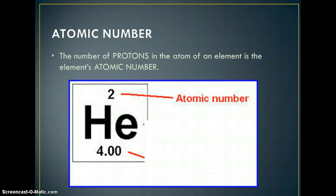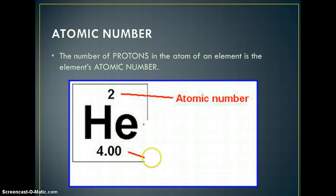We've talked about this in class already for our Bohr diagrams, but we're going to go over it again. Each element on the periodic table has a symbol in the middle and a number on top, which is the atomic number. The number of protons in the nucleus of an atom is the atomic number — that's the top number on the periodic table.